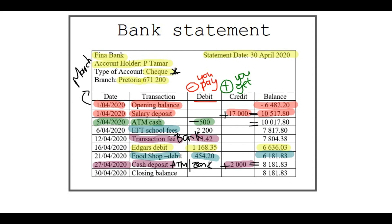Then there's a closing balance — on the last day when this person requested their statement, they ended with that amount, and they'll go into the next month of May with that amount. It is a positive amount.